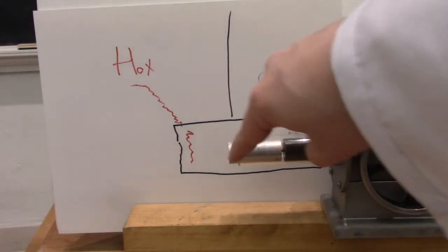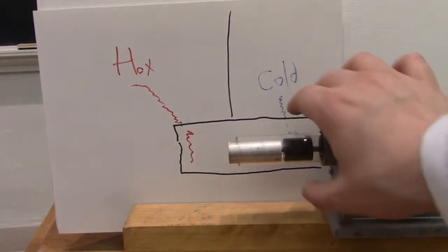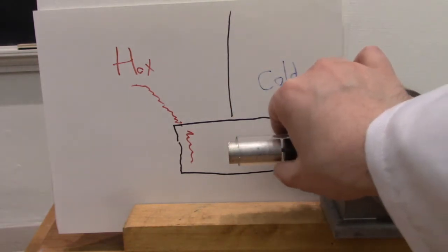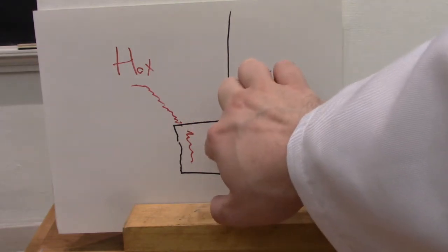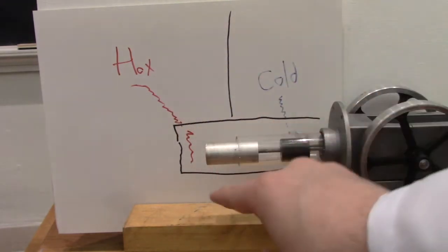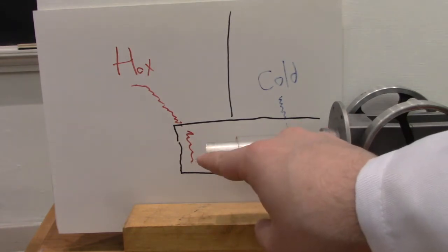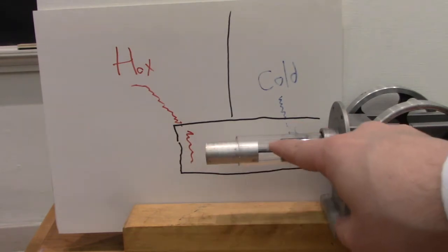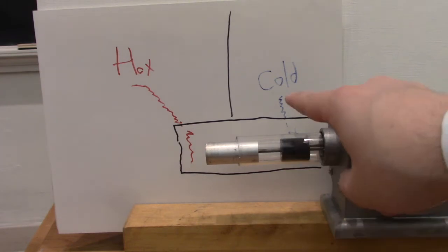Now when this displacer piston here is on the right there's no space for air over here, so all the air has to be over here where it'll be hot. When the displacer is over here there isn't as much room for air on this side, so a lot of the air is going to move over into this area of the piston which is going to be cold.